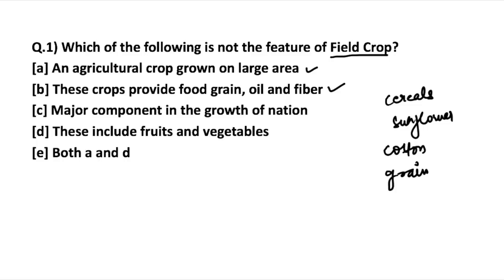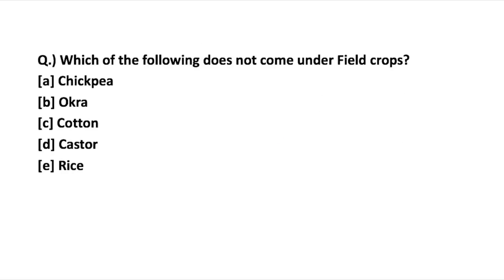Next: 'major component in the growth of the nation.' Since these crops fulfill the purpose of providing food, they automatically fulfill the purpose of being a major component in national growth. The next statement — 'these include fruits and vegetables' — is incorrect; this is NOT a feature of field crops. A complementary question for you: which of the following does not come under field crops — chickpea, okra, cotton, castor, or rice? Answer in the comments below.